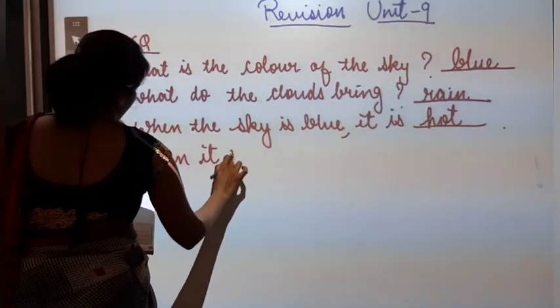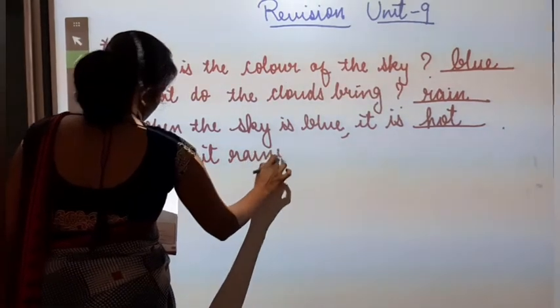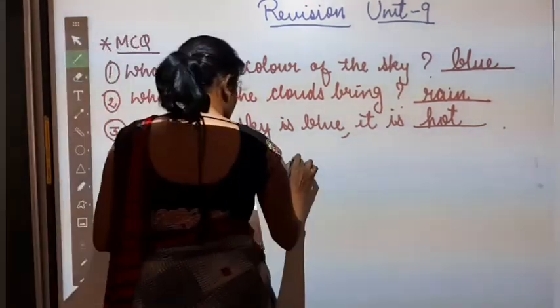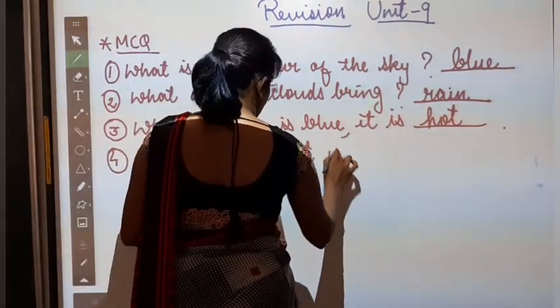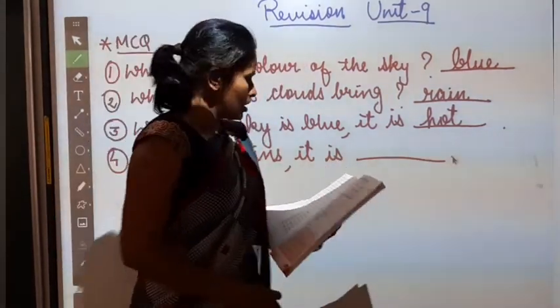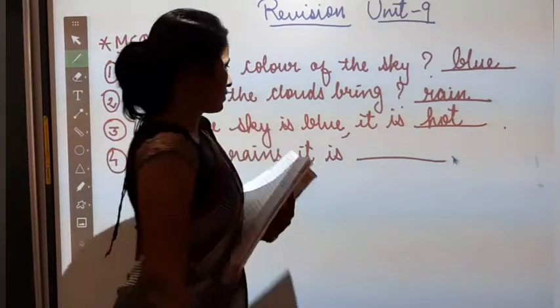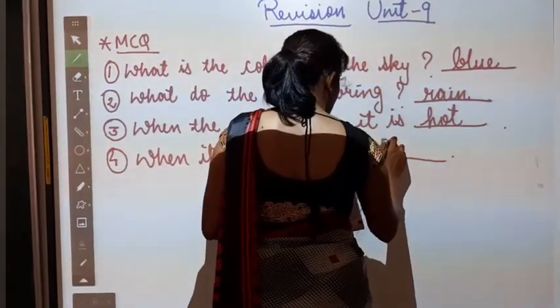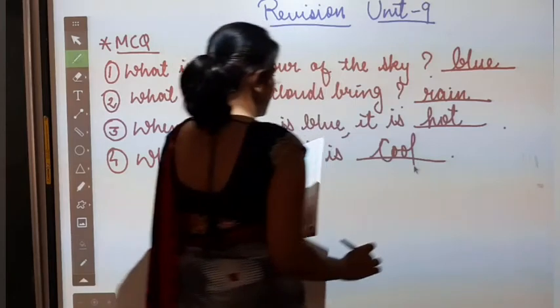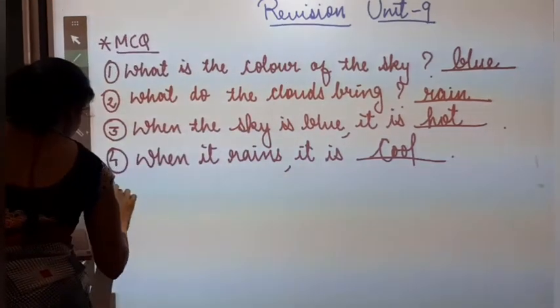When it rains, it is fresh. When it rains, it is hot, cool, bright, sunny. Okay? So it is cool, sunny. Number 5.